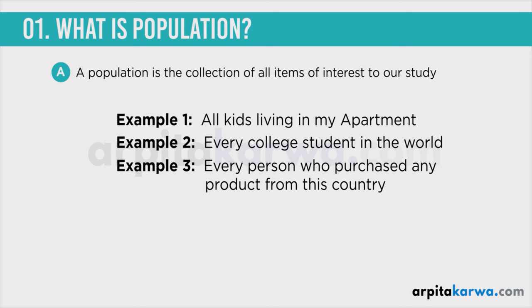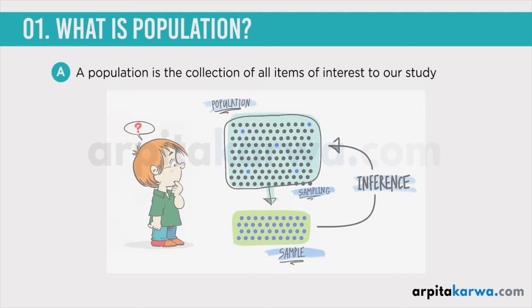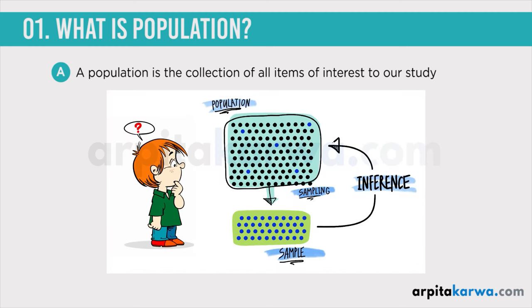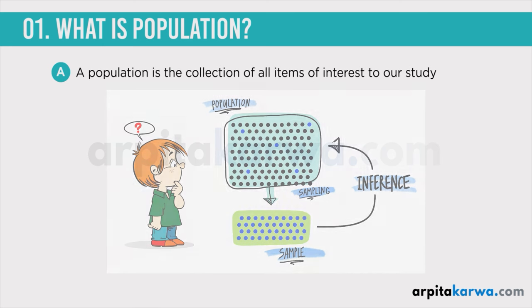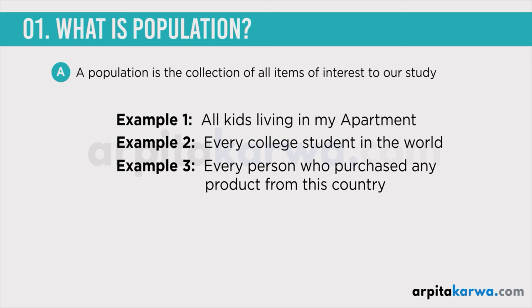So what he is going to do is take a sample, do the research on that sample, and then generalize the result to the entire population. When researching an aspect of human mind or behavior, researchers simply cannot collect data from every single individual in most cases. So instead they take a smaller sample of individuals that represents the larger group, which is the population.